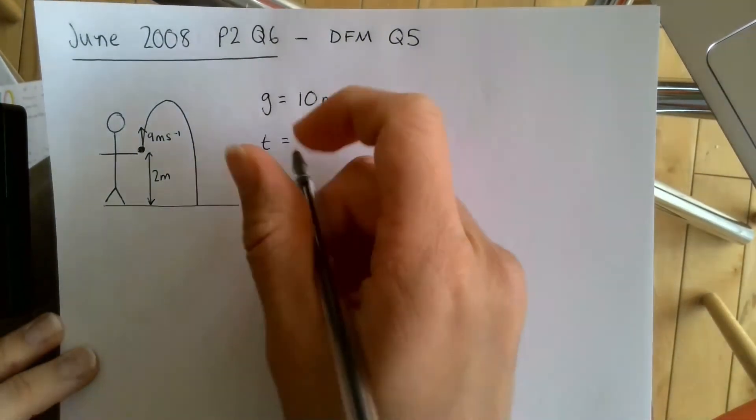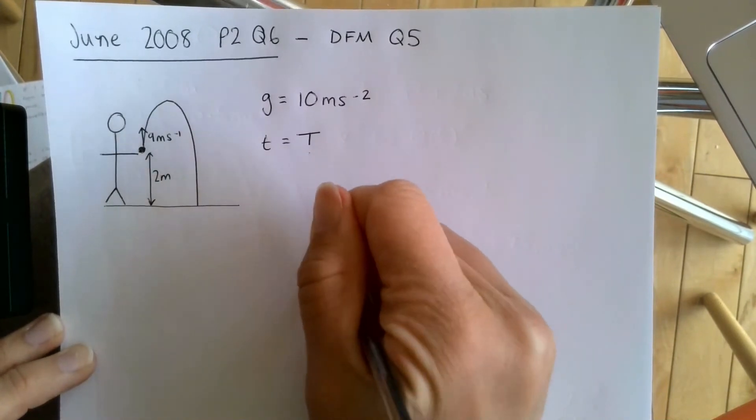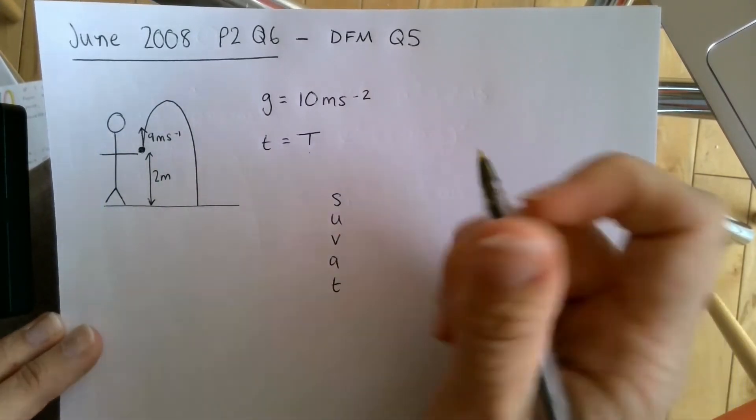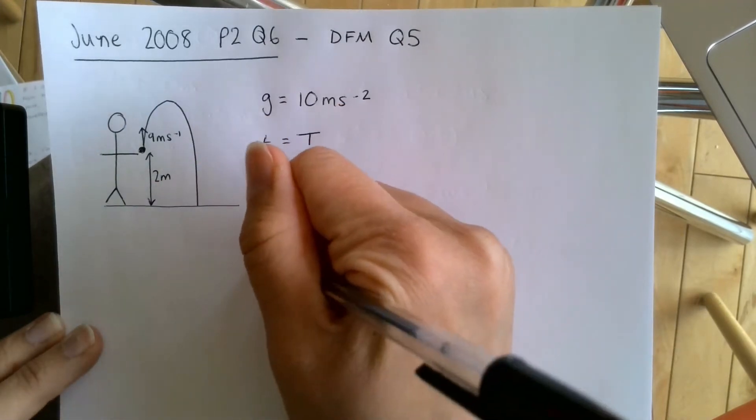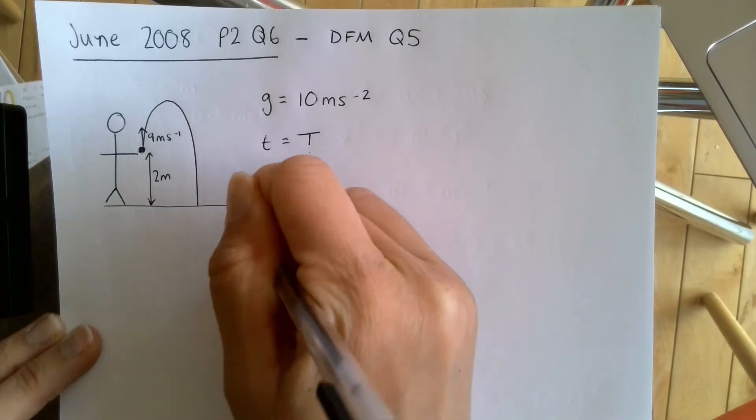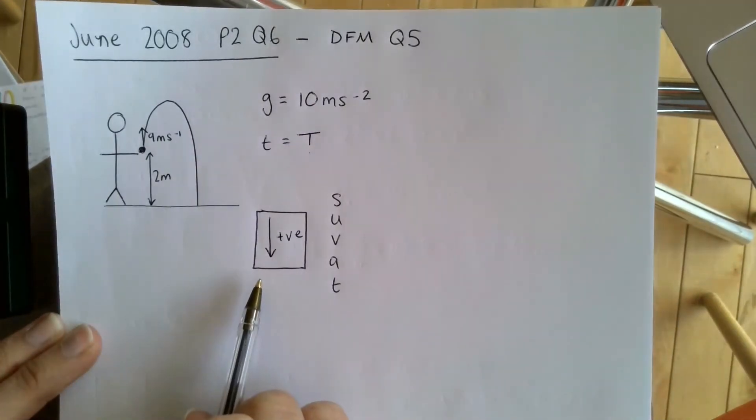Let's write what we know then. We've got S-U-V-A-T and I'm going to take downwards as positive here. It doesn't matter which one you take as positive or negative, but as long as you're consistent with it. I'm taking downwards as positive.